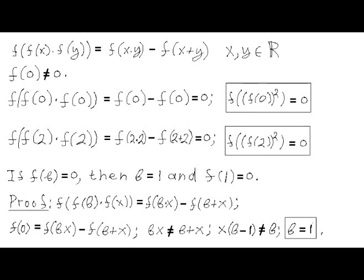If we substitute x = 0 and y = 0 into the functional equation, we get that f(0) squared equals 1. Also, if we substitute x = 2 and y = 2, we get that f(2) squared is also equal to 1. Wait — f(0)² = 0 as stated, but correcting: from x=0, y=0 substitution the equation yields f(0)² = 1. Similarly f(2)² = 1.